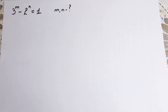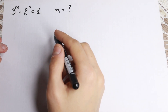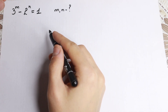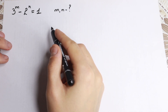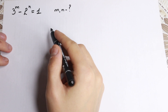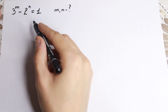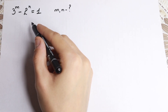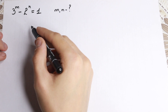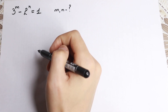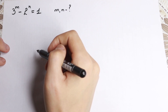Hello everyone! Happy to see you here and really interesting problem today. The problem is 3 to the power m minus 2 to the n equal to 1. We need to find, we need to solve for m and n. A lot of students can solve it by inspection and think they can easily find the answer in their head, but we need to solve it correctly step by step and find a correct solution.